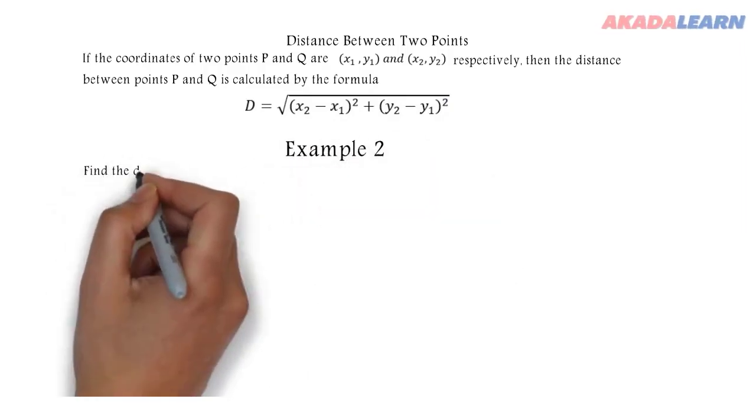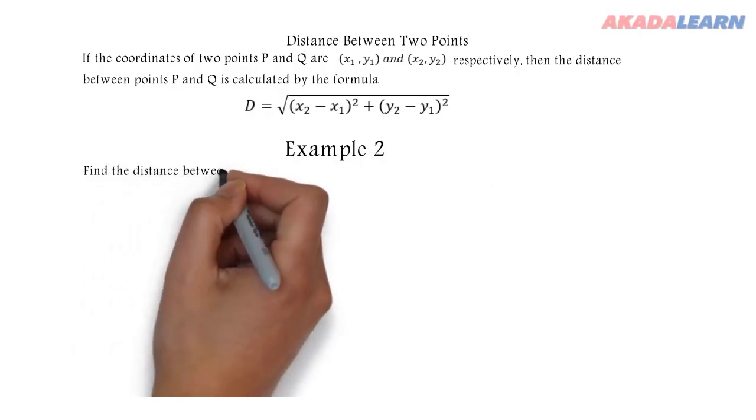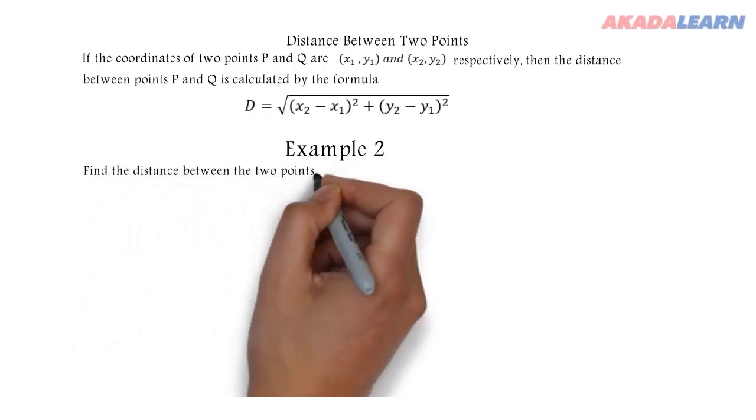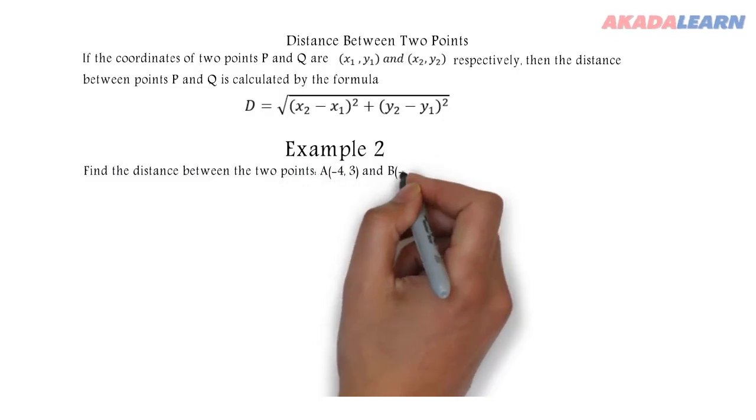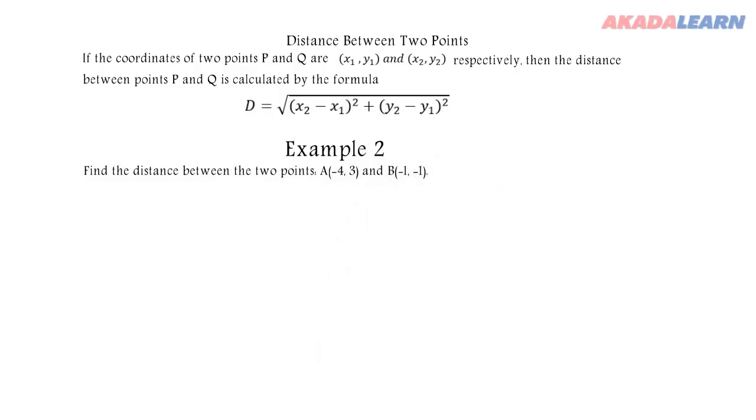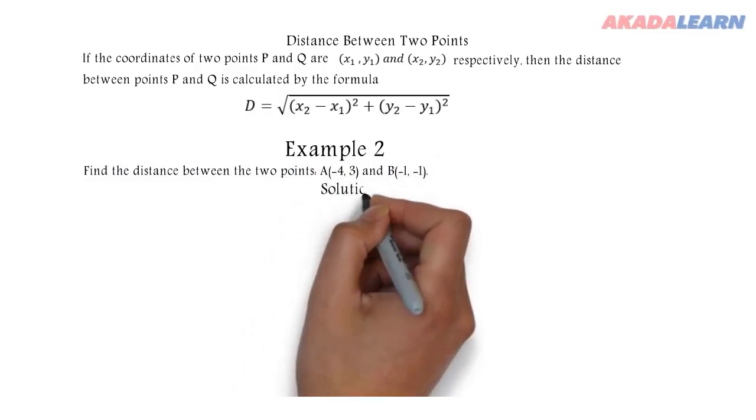Let's see how to apply that formula. We are asked to find the distance between the points A(-4, 3) and B(-1, -1). So our x₁, y₁, x₂, y₂ are given. Let's substitute.